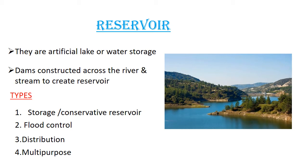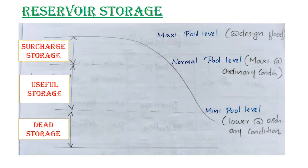The next topic is Reservoir Storage. Reservoir storage includes three types: Surcharge Storage, Useful Storage, and Dead Storage. In ordinary reservoir conditions, we have Maximum Pool Level and Minimum Pool Level. The Normal Pool Level is the maximum level under ordinary conditions, and the Minimum Pool Level is the lower right level. The storage between Normal Pool Level and Minimum Pool Level is called Useful Storage.